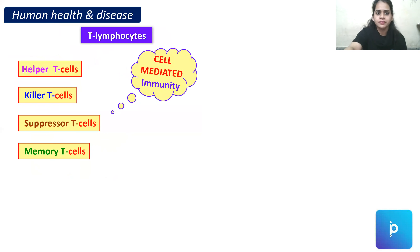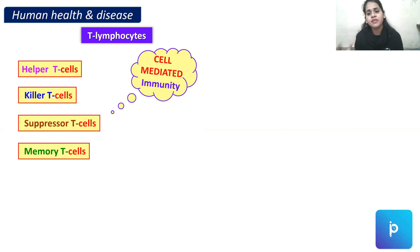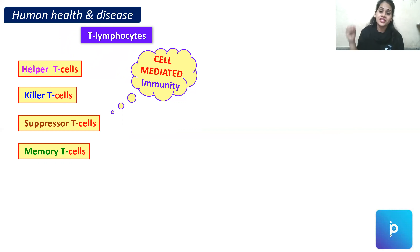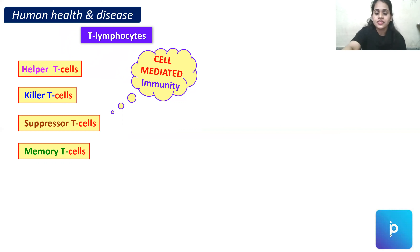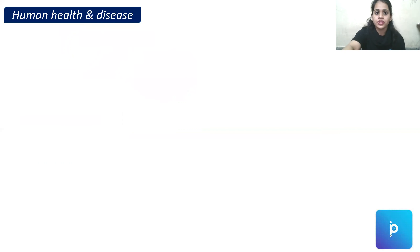Since immunity here is provided by four different types of cells — helper, killer, suppressor, and memory T cells — this type of immunity is called cell-mediated immunity. Cell-mediated immunity is an immunity provided by these T lymphocyte cells. That is all about T lymphocytes.